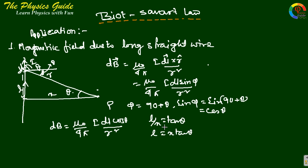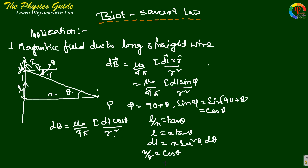Therefore dL equals x secθ dθ. We now convert another variable — we convert R in terms of θ as well. From the figure, x by R equals cosθ, so 1 by R squared equals cos²θ by x squared.